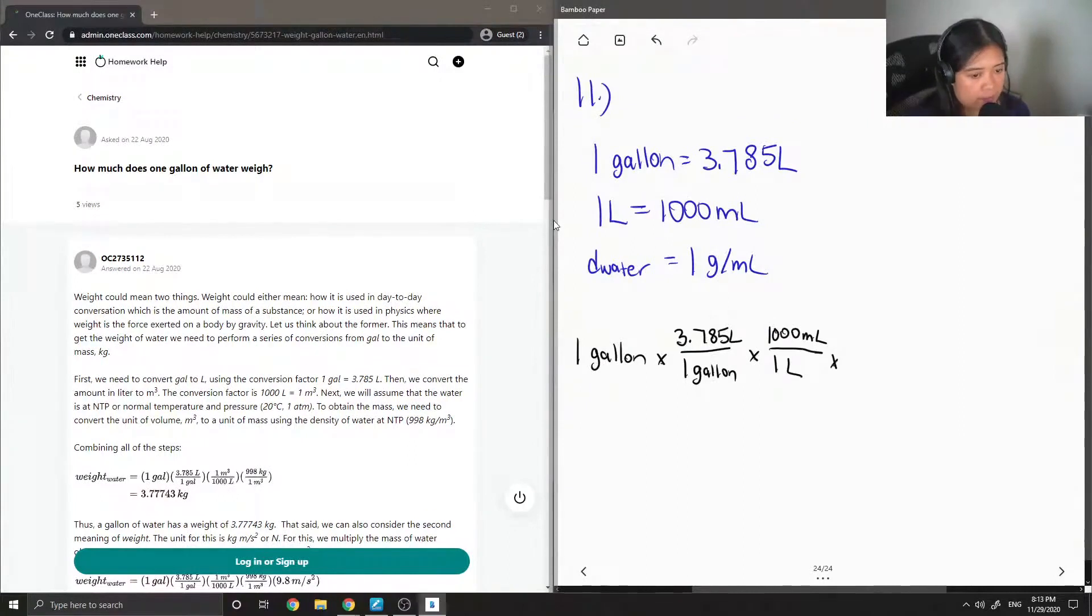And then lastly converting milliliters to grams. So this is the density of water, so 1 gram per milliliter. And then you'll notice that our units will cancel out, so the gallons cancel out, and then the liters, and then lastly milliliters. Then this gives us a final value in grams, which is 3,785 grams of water in one gallon.